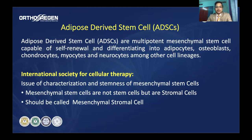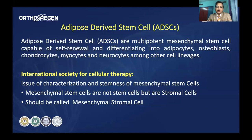Adipose-derived stem cells are multipotent mesenchymal stem cells capable of dividing and differentiating into other cells like fat cells, osteoblasts, or chondrocytes. The International Society for Cellular Therapy holds a slightly different opinion: according to them, the mesenchymal stem cell is not actually a stem cell but rather a stromal cell — supporting connective tissue found in the body — and should therefore be called mesenchymal stromal cells.